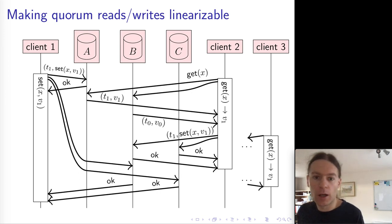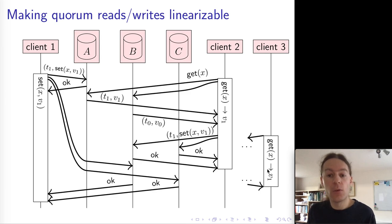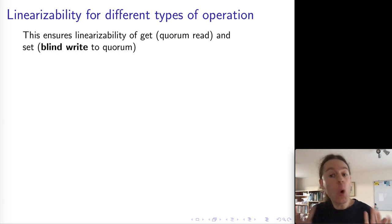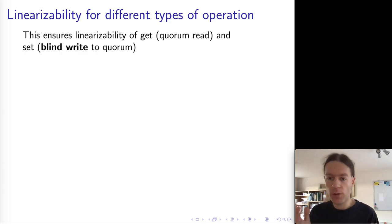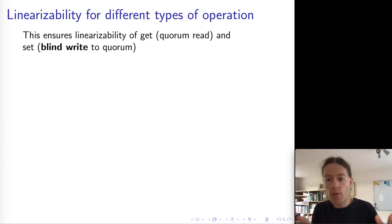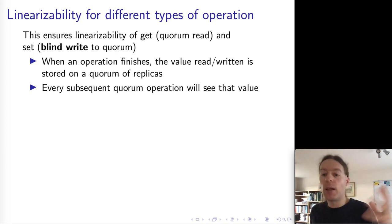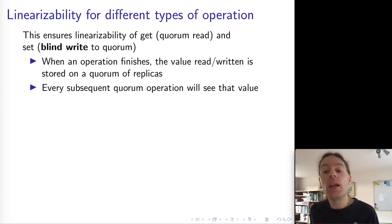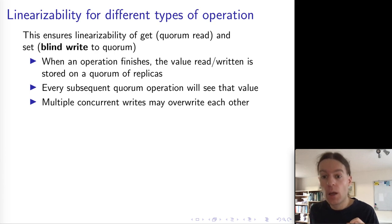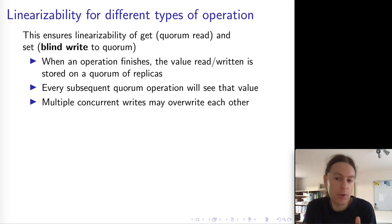With this fix, client 3 is now assured to see the value v1. This gives us linearizability for get and set requests: the get uses a quorum read with read repair, and the set is a blind write — an unconditional overwrite of whatever the current value is with the new value. This algorithm is called the ABD algorithm and is sufficient to ensure linearizability of these operations.